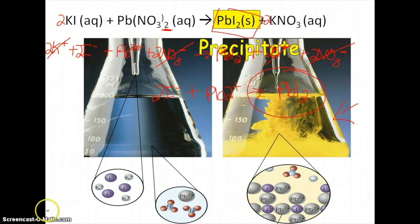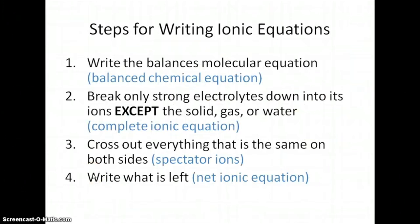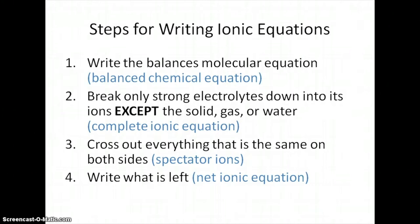So that's what you're trying to do — identify the precipitate when you write the complete ionic and net ionic equations. To summarize, here's a list of all the rules for writing ionic equations. First, write the balanced molecular equation. Then take all the electrolytes and break them down — that's your ionic substances that are AQ. You cannot break down solids, gases, or water. Then cross out everything that's the same on both sides — those are your spectator ions — and what's left gives you your net ionic equation. Those are the steps in order.